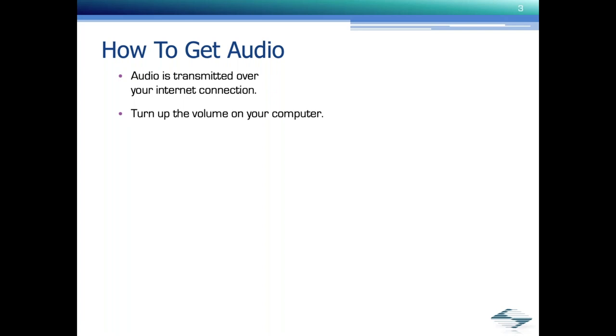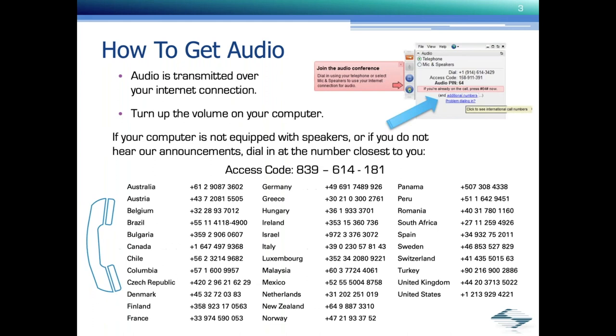If you are experiencing audio issues and your computer is equipped with either speakers or headphones, please check volume settings and any cable connections. If your computer is not equipped with speakers or is still having issues hearing me, then you could join the conference by telephone. All you need to do is select telephone as the audio source on the webinar control panel and dial into one of the international numbers shown on this slide. To join the conference, you will also need to enter the webinar access code, which is 839-614-181, as shown here.